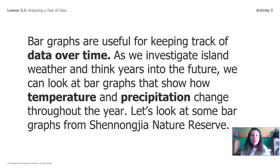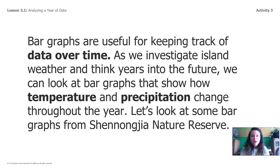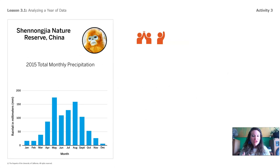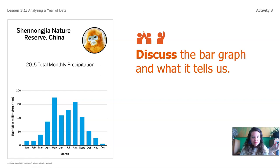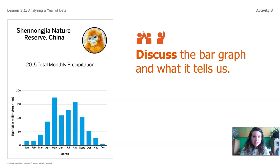As we investigate island weather and think years into the future, we can look at bar graphs that show how temperature and precipitation change throughout the year. Now for some more practice, let's look at some bar graphs from Shenangia Nature Reserve — that's in China. So here's a bar graph from this nature reserve in China. Look across the x-axis on the bottom — do you see that the months are listed? The bar graph is showing us the rainfall in millimeters, so we're seeing a year's worth of rainfall broken down by month.